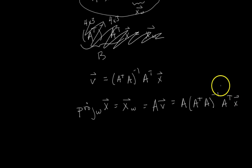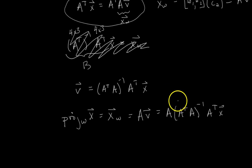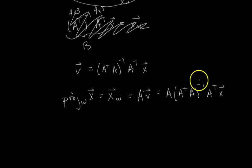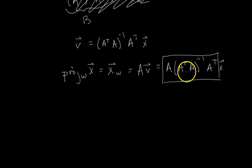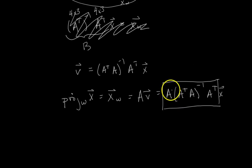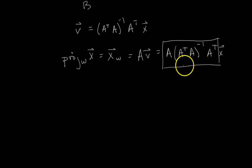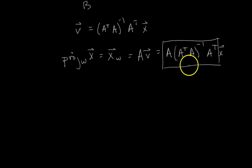And that, ladies and gentlemen, is the formula for the standard matrix projecting onto some subspace W, where the basis vectors of W are placed as columns of matrix A. I made this video for anyone who gets frustrated when I just say 'here's the formula, memorize it.' So there's the derivation. We'll do some applications of this in further videos. Thanks for watching.